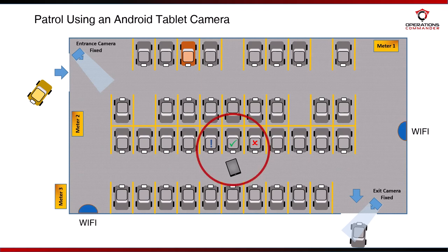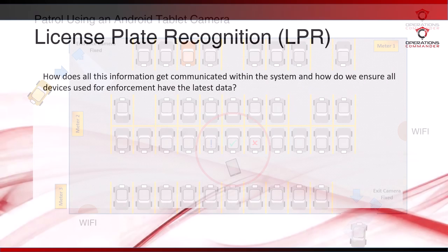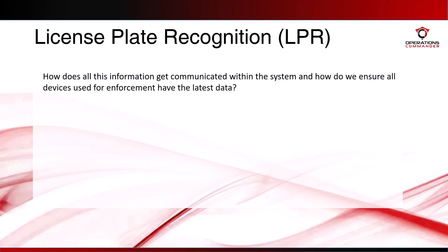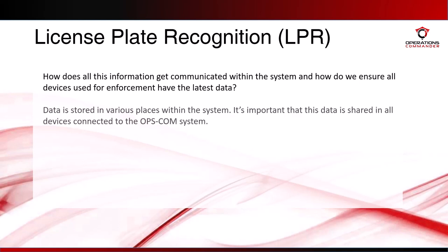So how does all this information get communicated within the system, and how do we ensure all devices used for enforcement have the latest data? Data is stored in various places within the system, and it's important that this data is shared to all devices connected to the Opscom system. Let's have a look at how this information is synchronized to allow up-to-date data to be available not only to admins in the head office, but to patrol officers as well.